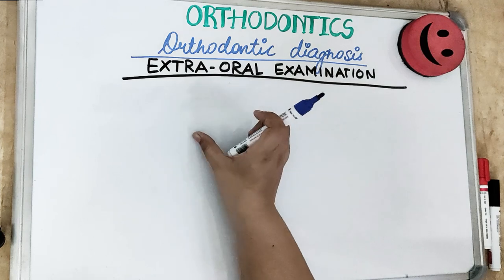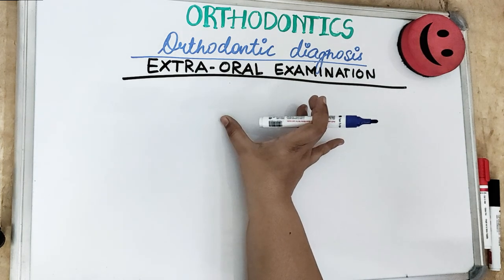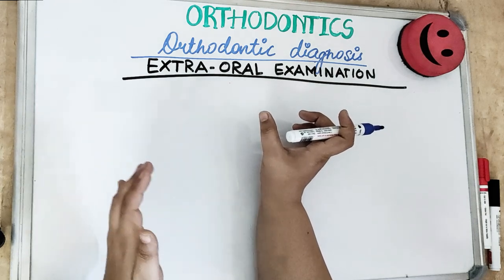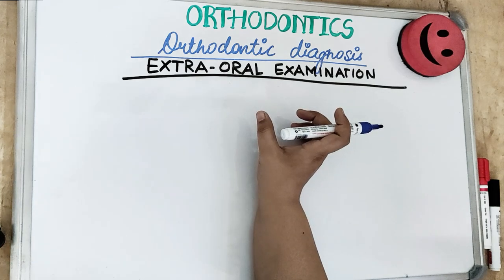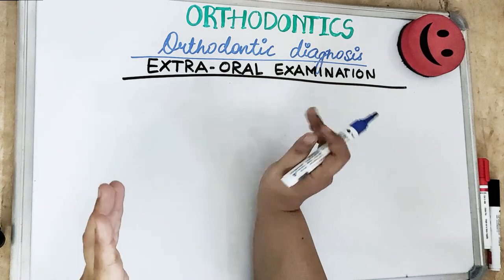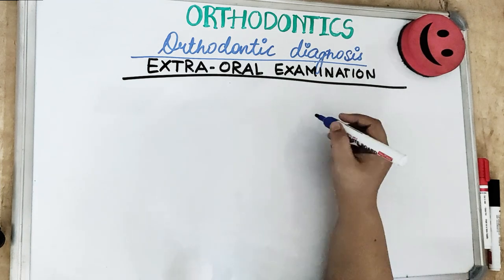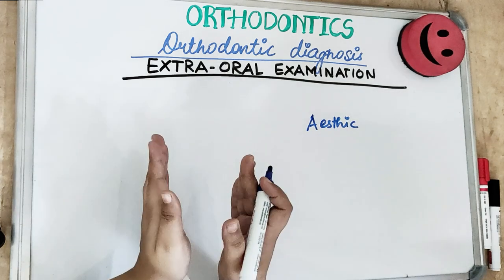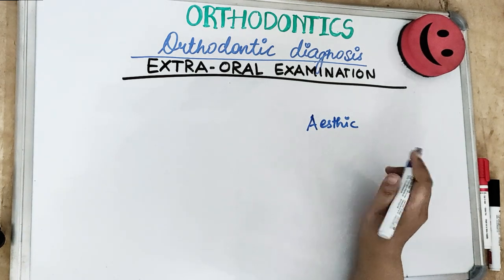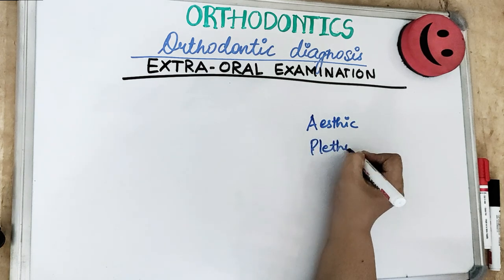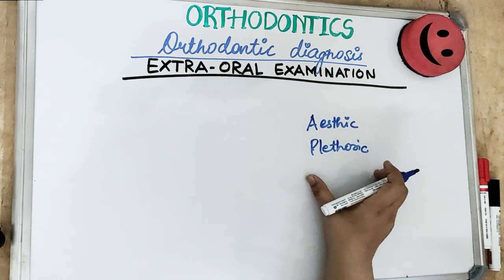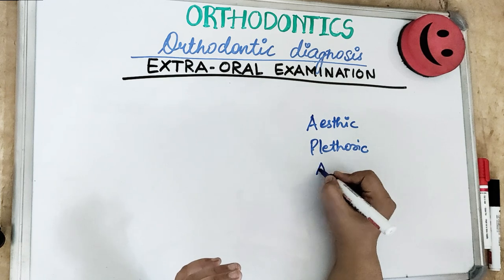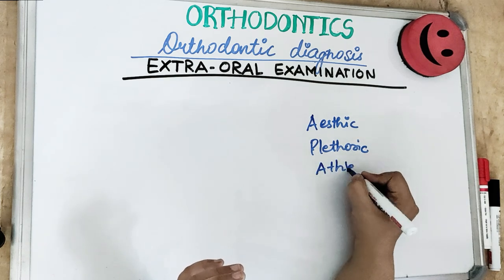Today we'll start with the clinical examination. Extra-oral examination begins before the patient takes a seat in the dental chair. We should attempt to estimate the chronological age from the height and build of the patient. Build is divided into three types: the aesthetic build, where the person has a thin physique and usually narrow dental arches; and the plethoric build, where the patient is obese with large or squarish dental arches.